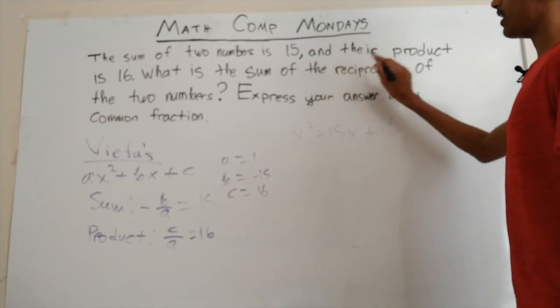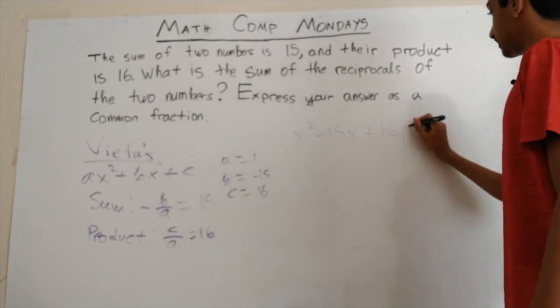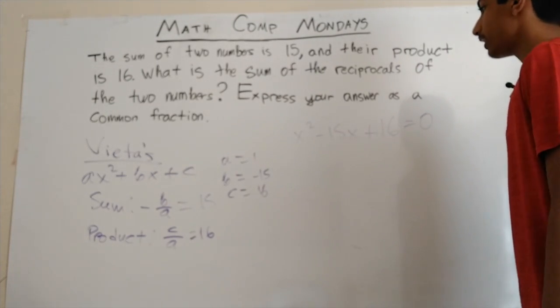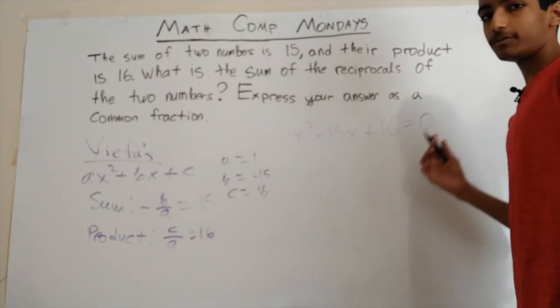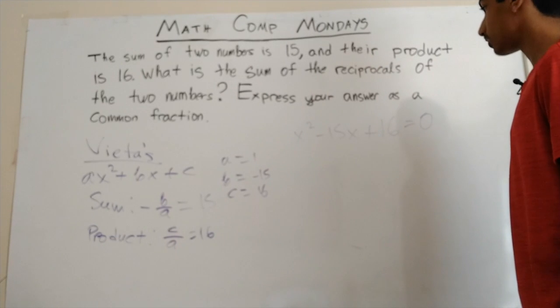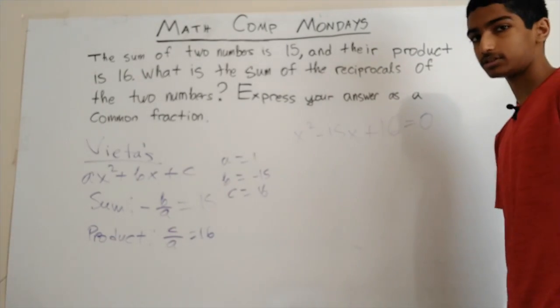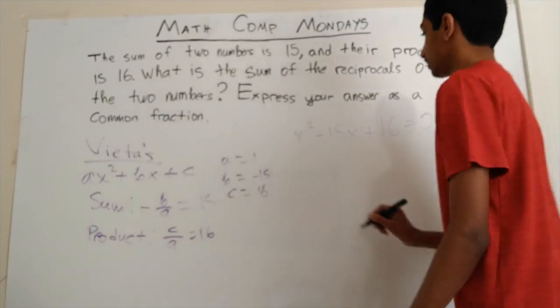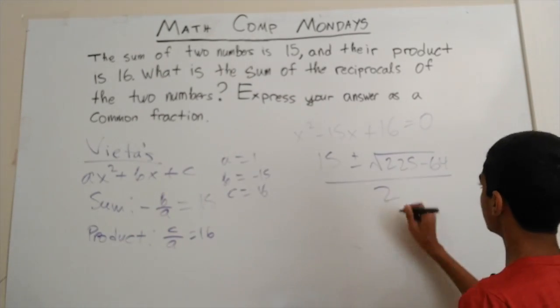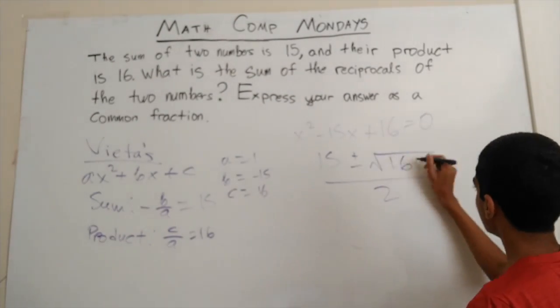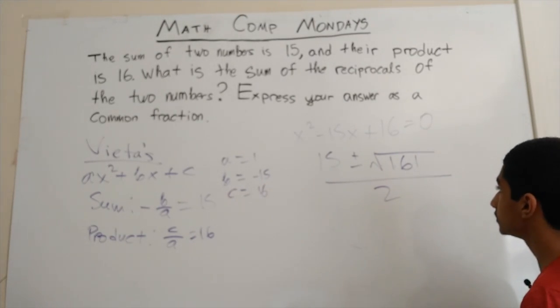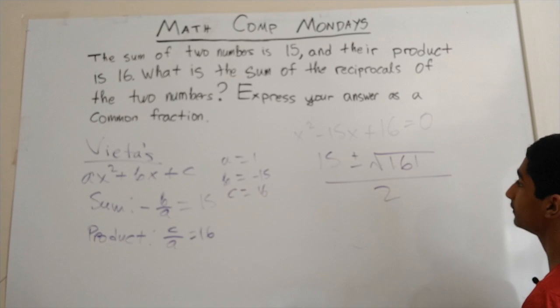And we want the sum of the reciprocals of the two numbers. So we want to set this equal to 0. And if we try factoring, this won't work. So it looks like we're going to have to use the quadratic formula. Okay, so here are our two roots: 15 plus square root of 161 all over 2, or 15 minus square root of 161 over 2.